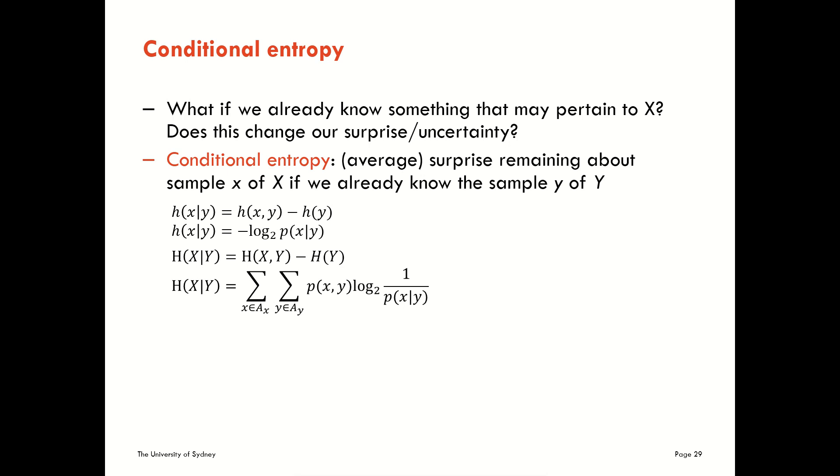It's the surprise, either the specific surprise from a given realization or the average uncertainty that remains about a given sample of variable X if we already know some other sample Y of variable big Y.